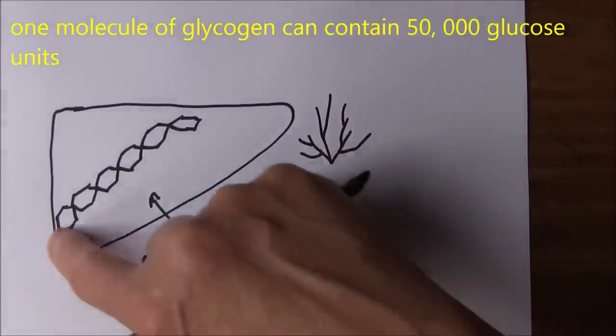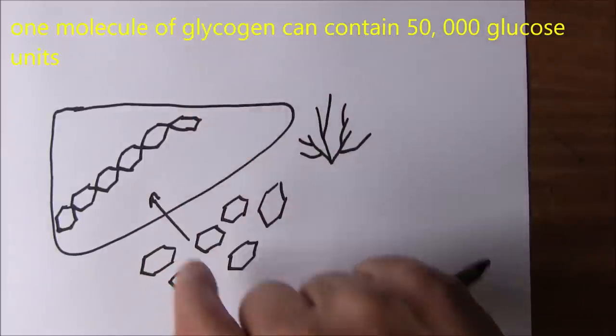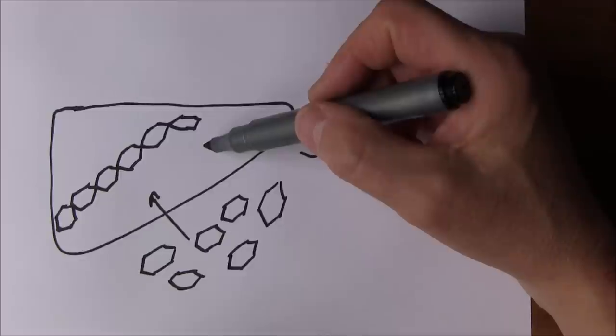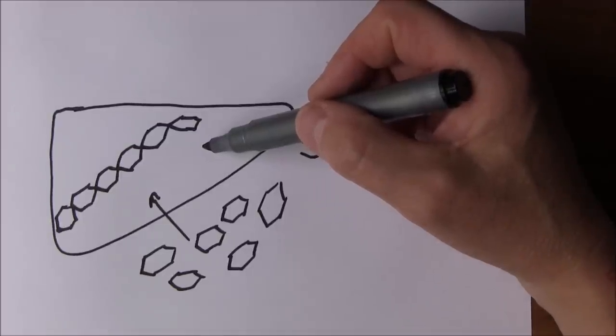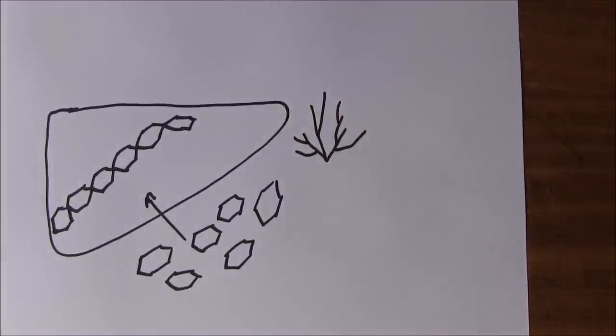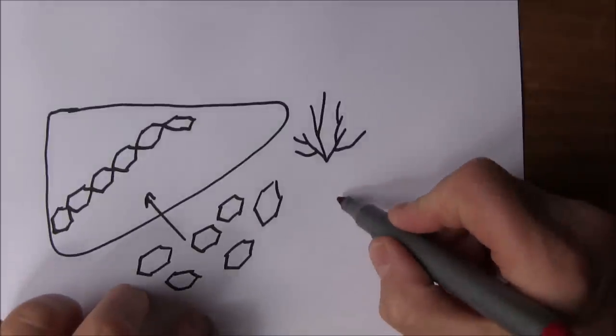About 50,000 glucose molecules can be stored in one large molecule of glycogen. It's stored in the liver just in case we need it. In your liver, if you're an adult, 100 to 120 grams of glycogen will be stored. There's another 400 grams or so of glycogen stored in the muscles of the body, particularly skeletal muscles.